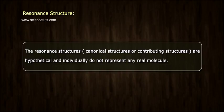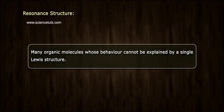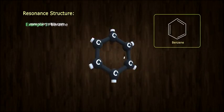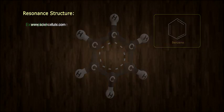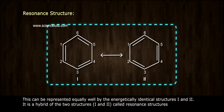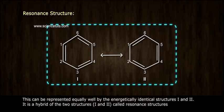Resonance structure. The resonance structures, canonical structures, or contributing structures, are hypothetical and individually do not represent any real molecule. Many organic molecules whose behavior cannot be explained by a single Lewis structure. Example 1: Benzene. This can be represented equally well by the energetically identical structures 1 and 2. It is a hybrid of the two structures, 1 and 2, called resonance structures.